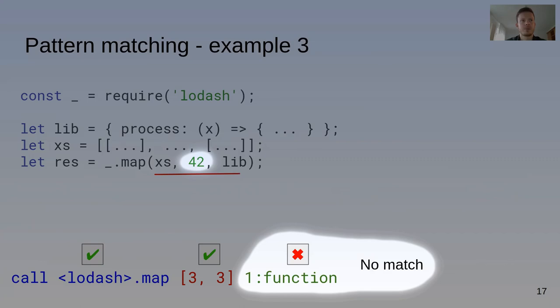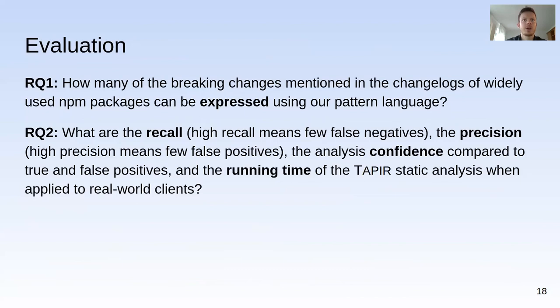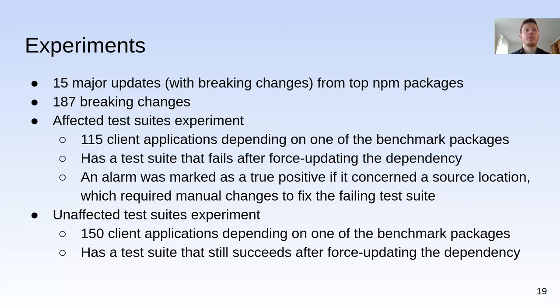To see how well Tapir performs in practice, we conducted an evaluation answering two research questions: how many of the breaking changes in the changelogs of widely used NPM packages can be expressed using our pattern language, and what are the recall, precision, analysis confidence, and running time of Tapir when applied to real-world clients? We selected 15 major updates of top NPM packages that all contain breaking changes — in total, 187 separate breaking changes — and attempted to write detection patterns for each.